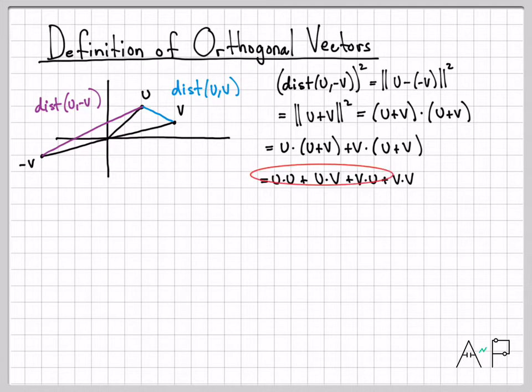I can simplify this a little bit. We know what u·u is—that's just the norm squared of u. And v·v is the norm squared of v. Then I have u·v and v·u, but order doesn't matter, so I really have two u·v's when I add those up. So that's the distance squared between u and negative v: ||u||² + ||v||² + 2u·v.